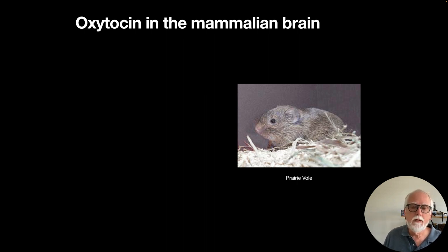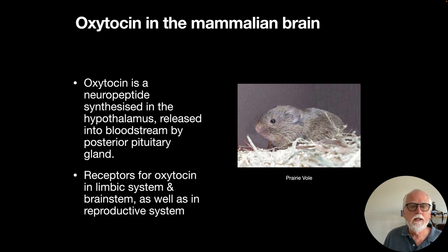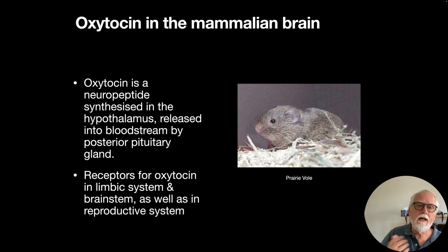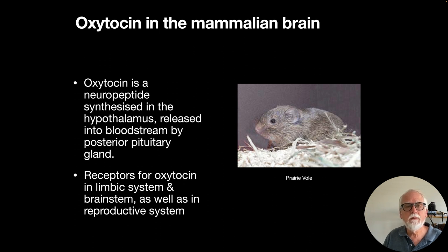Much of what we know about oxytocin comes from research on prairie voles, which are studied for how they bond. Oxytocin is a peptide synthesized in the hypothalamus and released into the bloodstream by the posterior pituitary gland. Receptors for oxytocin are in the limbic system and brain stem, as well as in the reproductive system. So oxytocin has receptors both in parts of the brain involved in emotion and in parts of the body involved in reproduction.